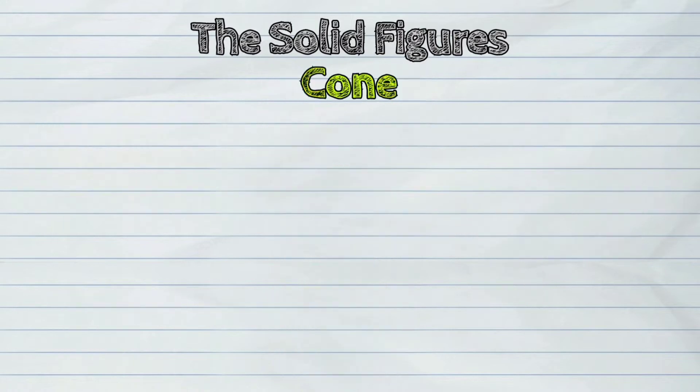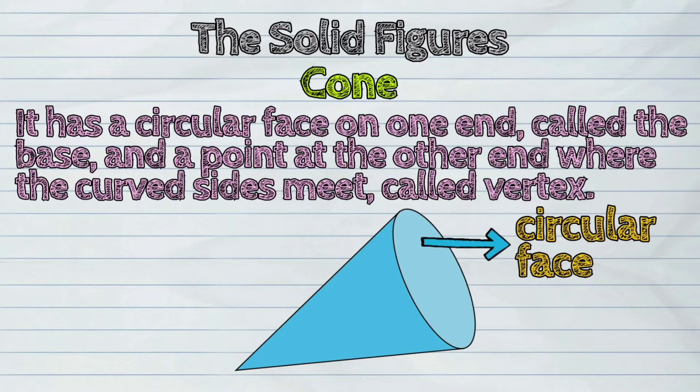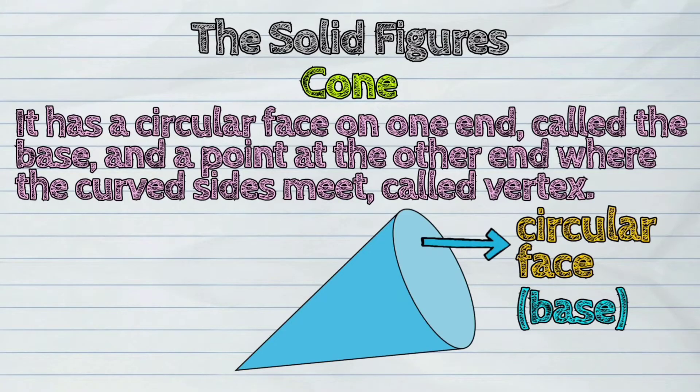Fifth, the cone. It has a circular face on one end called the base, and a point at the other end where the curved sides meet called vertex.